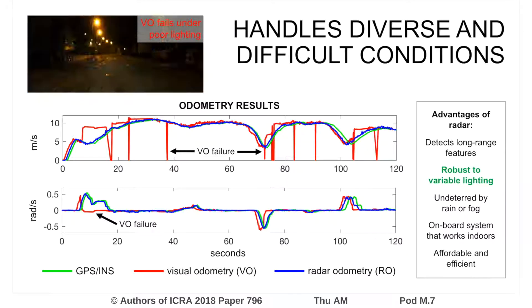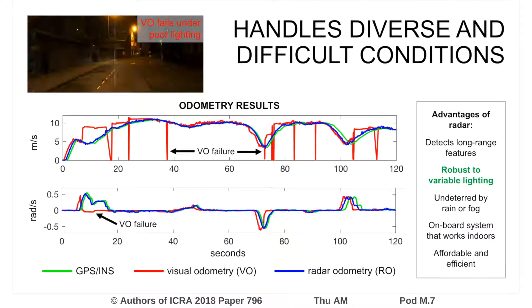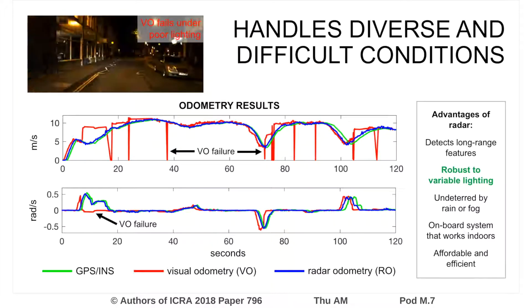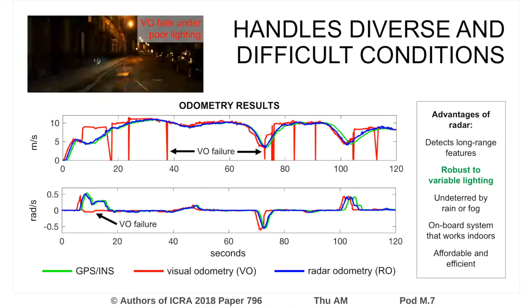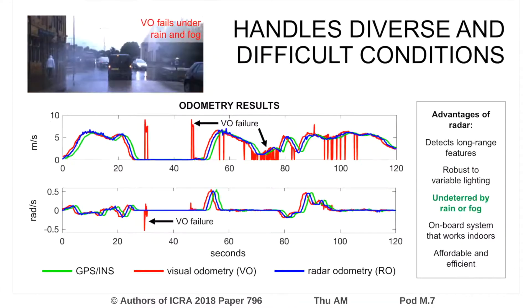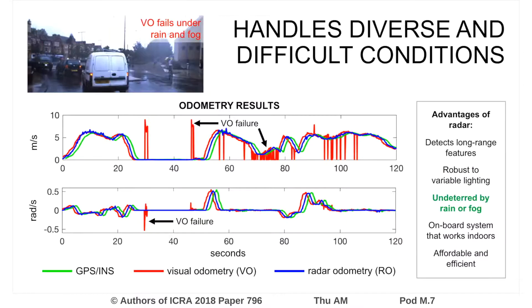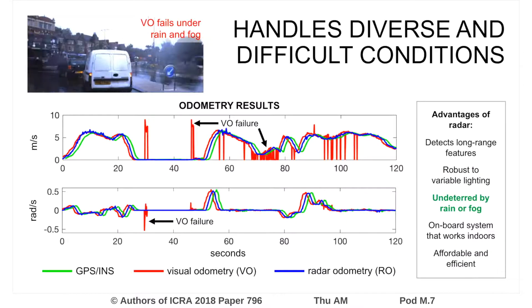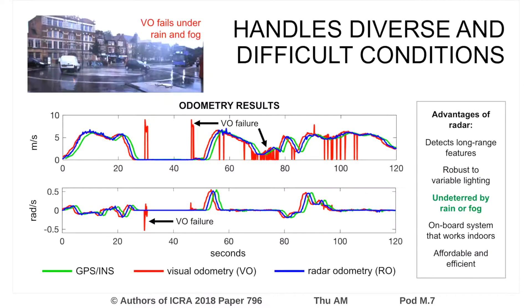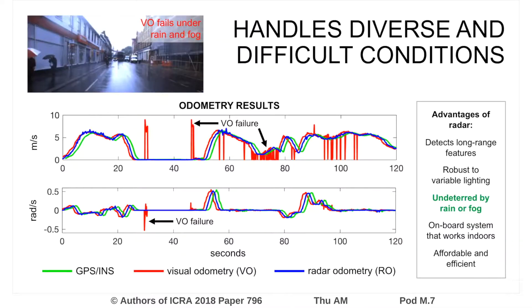Here we show that radar odometry performs well under variable lighting, for which visual odometry often fails. Due to its wavelength, radar is undeterred by rain and fog, under which visual odometry does poorly.